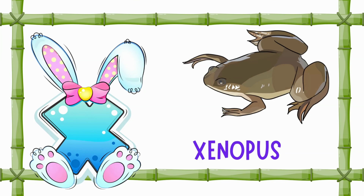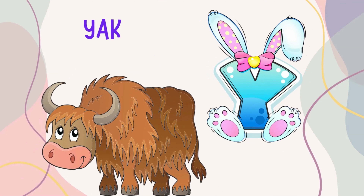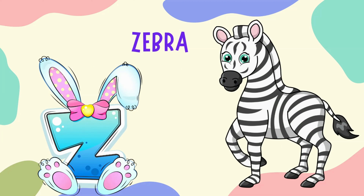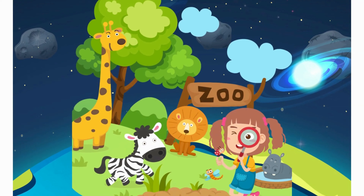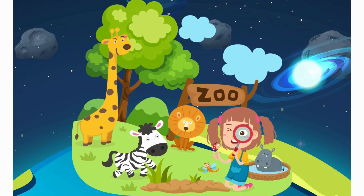X is for xenopus. Y is for yak. Z is for zebra. Z is for zoo, where all the zoo animals live.